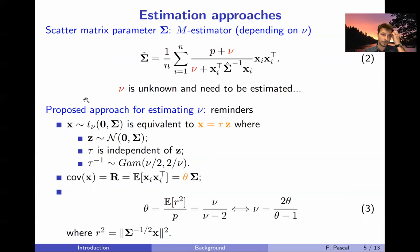So what is our proposed approach for estimating these parameters? Just a couple of reminders. When the vector follows a T-distribution, it is equivalent to write that this vector x is the product of tau and z, where z is a Gaussian vector zero mean with covariance matrix sigma. Tau is independent of z and the distribution of tau is as follows: it's an inverse gamma distribution with those two parameters.